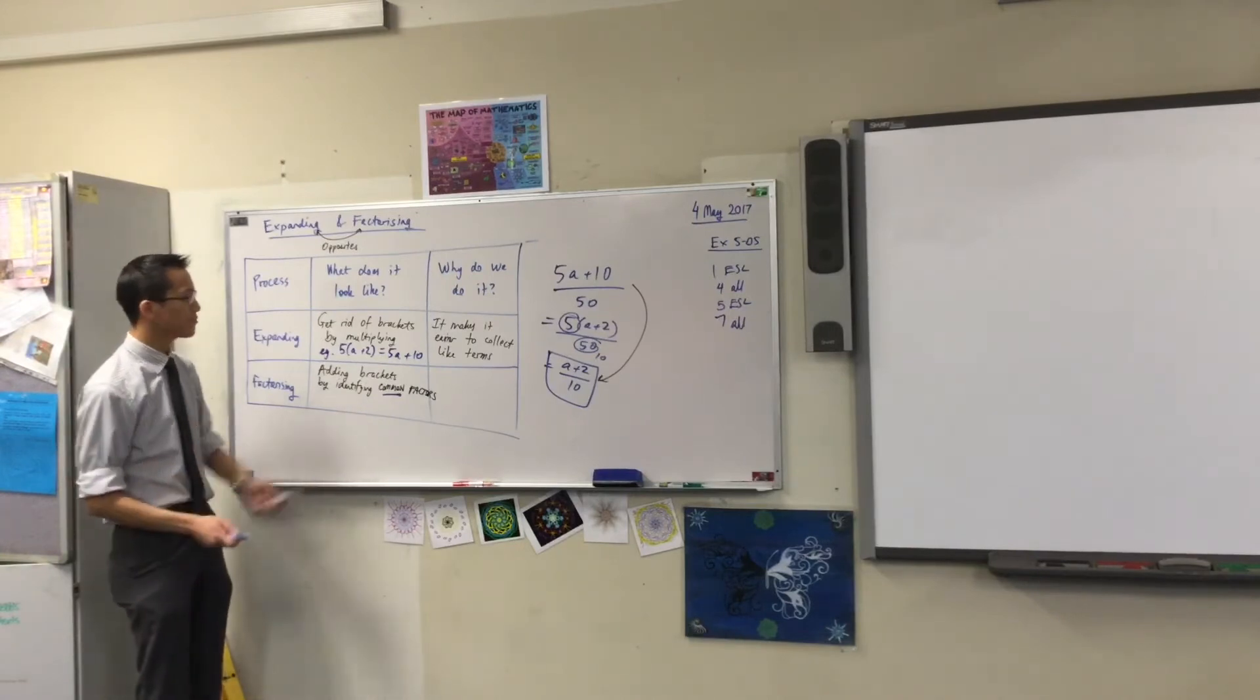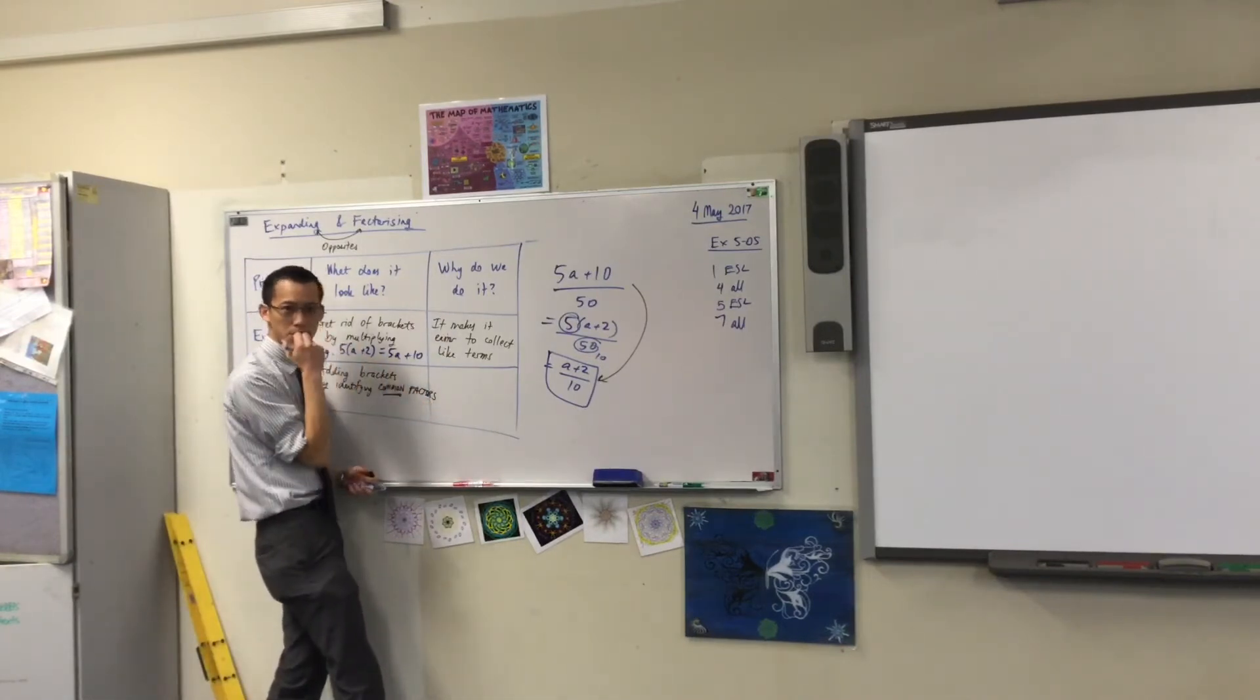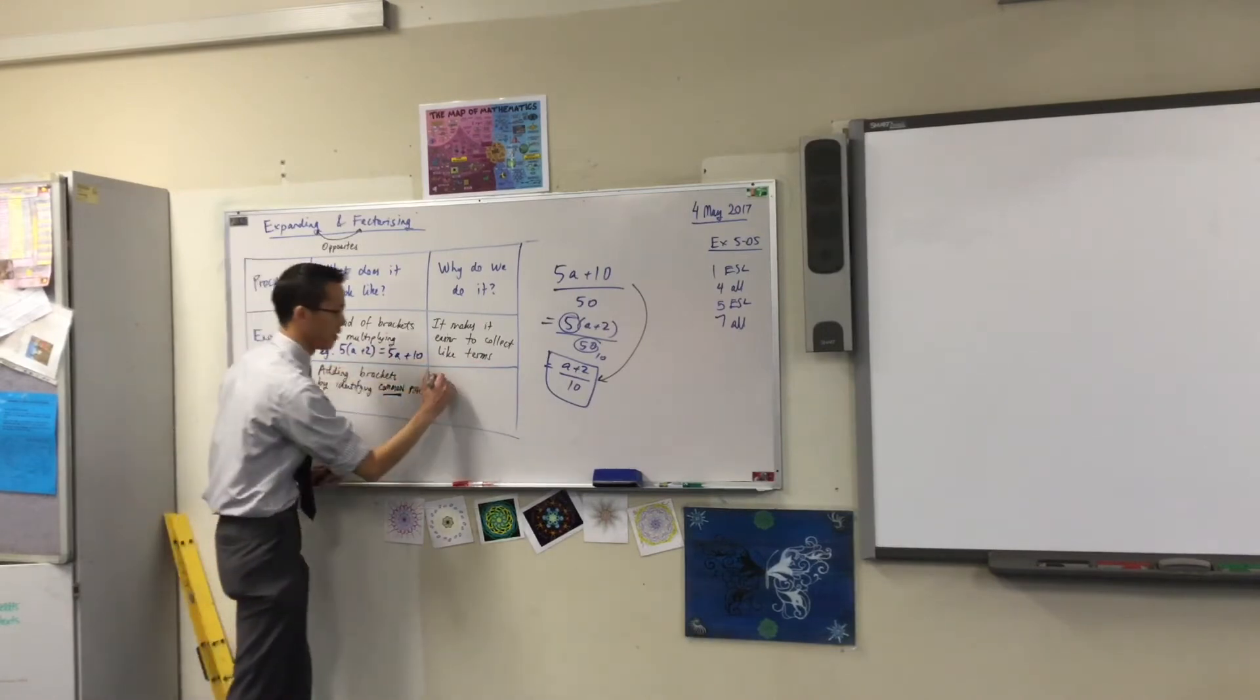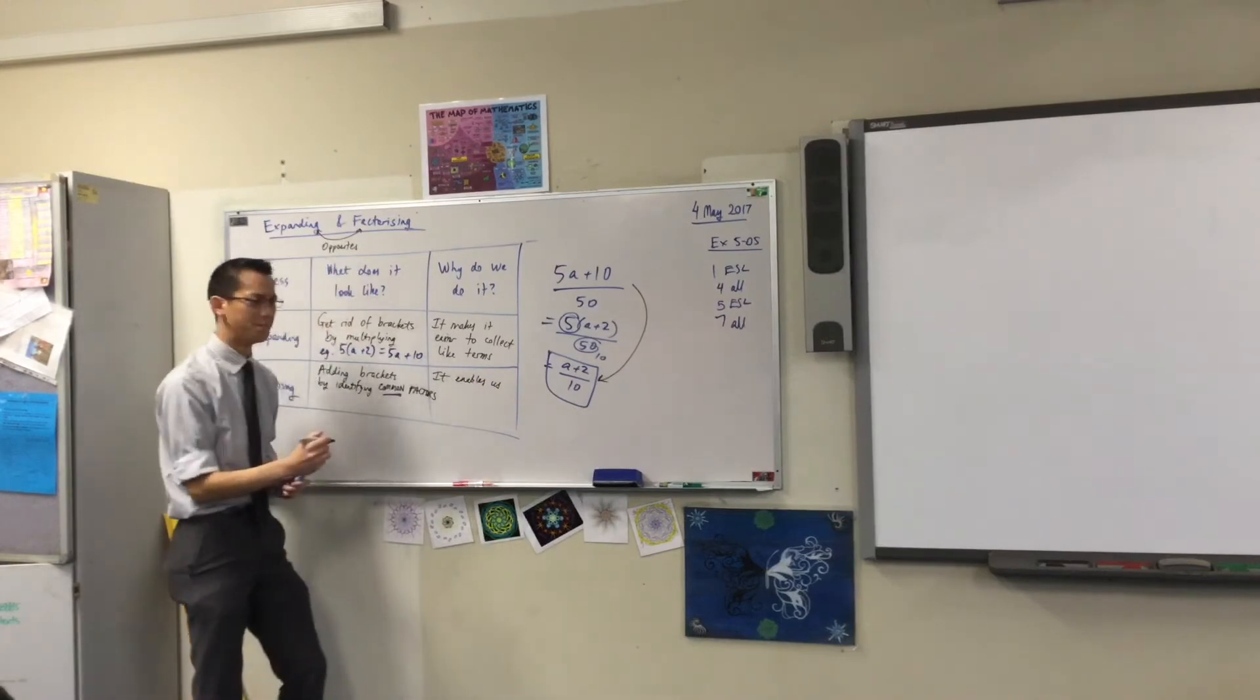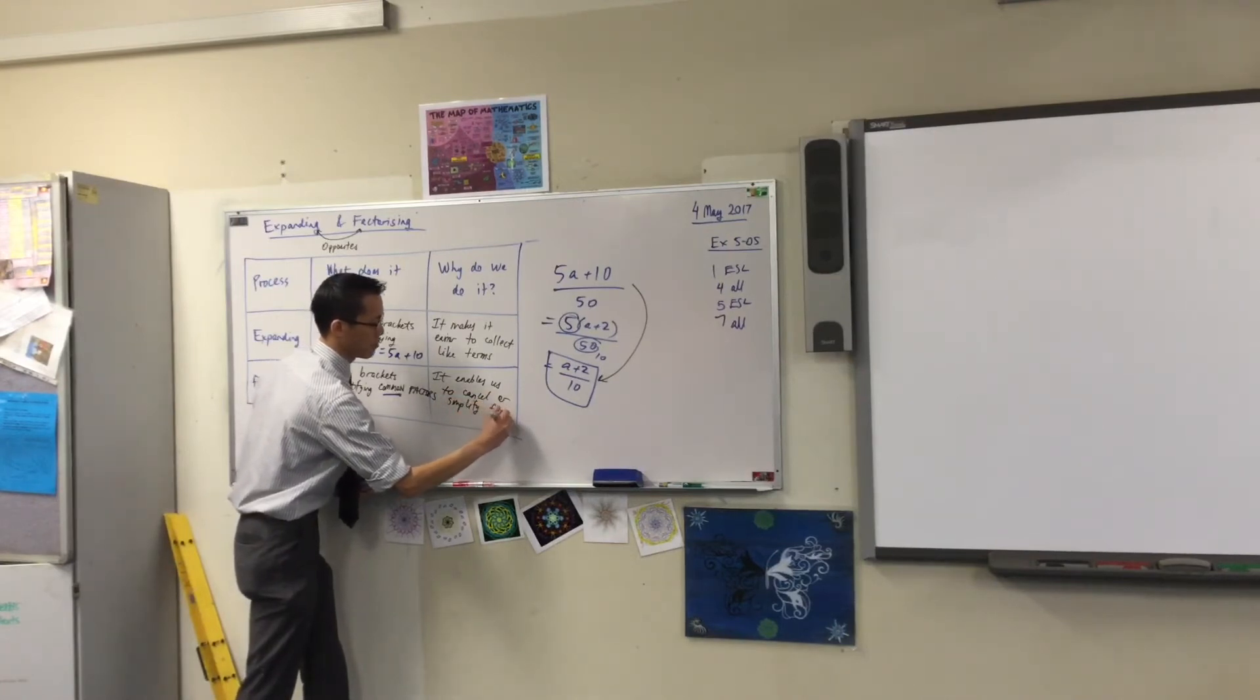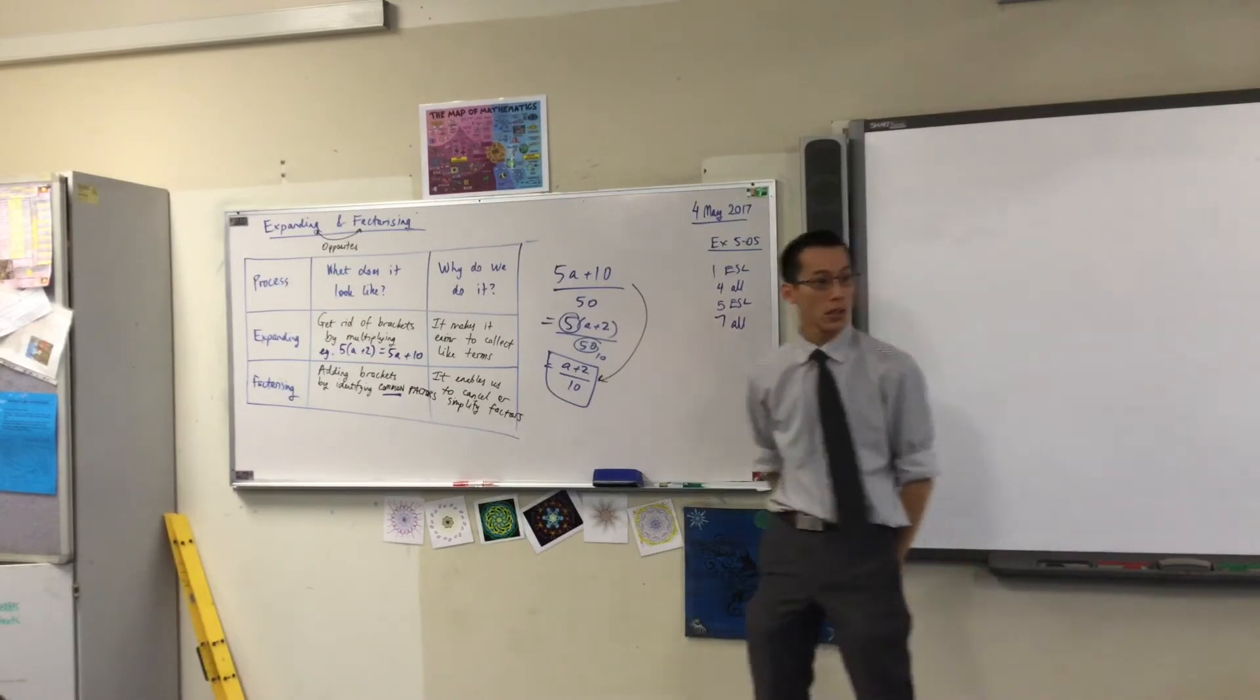How are we going to word this? We expand because it makes it easier to collect like terms. I would suggest we factorize because what? What did it allow us to do here? It enables us to cancel or simplify factors. We've seen it in algebraic fractions. Because canceling happens a lot in fractions, it makes them easier to work with. But there are lots of other cases too.